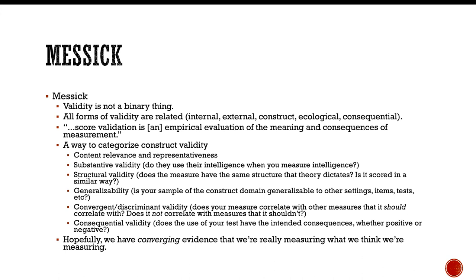Generalizability. So is your sample of the construct domain generalizable to other settings, items, tests, et cetera? So you have one measure. Does it generalize to other measures of validity or other measures of that same construct? Convergent and discriminant validity? Does your measure correlate with other measures that it should correlate with? Like love may, at least romantic love should measure or should correlate with measures of attraction. And likewise, it shouldn't correlate with measures that it shouldn't be that theoretically shouldn't be correlated with it. So your love of someone should be uncorrelated with your shoe size, for example. Okay. So do those things naturally remain uncorrelated?